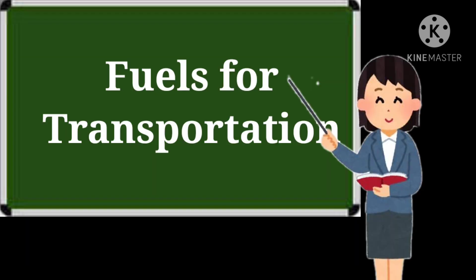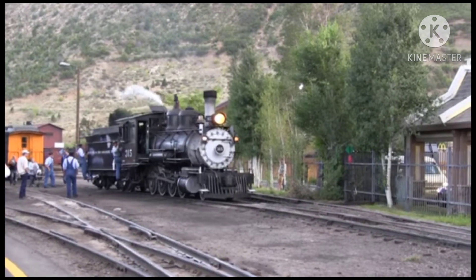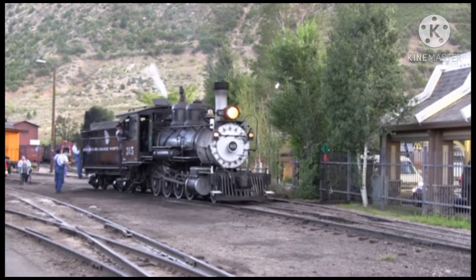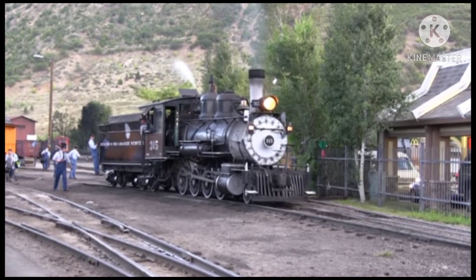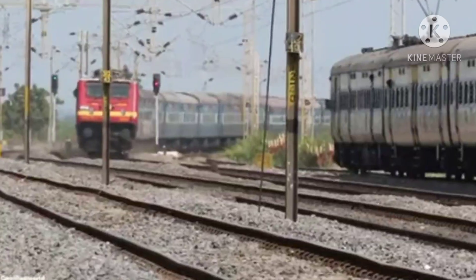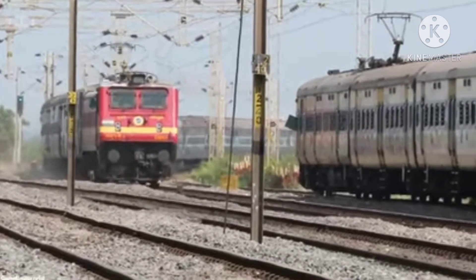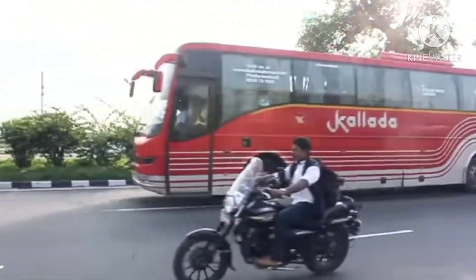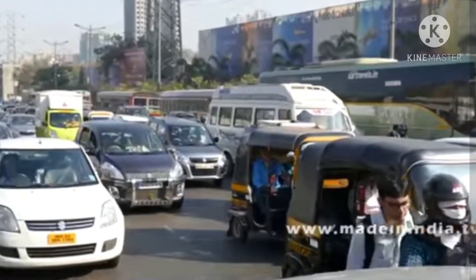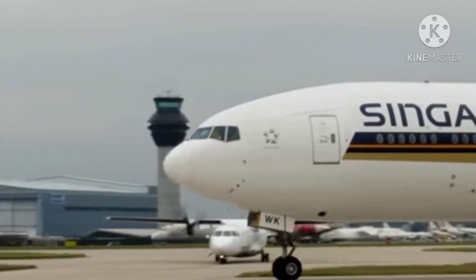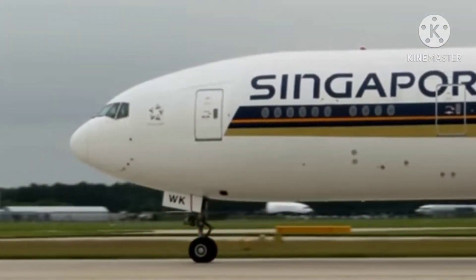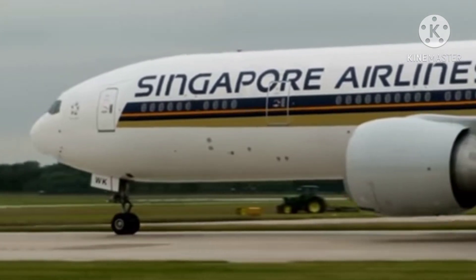Now children, we will talk about the fuels for transportation — ki transportation ke liye kaunse fuels use kiye jaate hain. Trains were earlier run with the help of steam engines. In engines mein steam produce ki jaati thi by burning coal. Aaj kal train engines electricity use karti hain ya phir they run on diesel. Vehicles like buses, cars, and scooters run on petrol or diesel. Aeroplanes use karti hain highly refined kerosene-based fuel which is called aviation turbine fuel, yani ki ATF.